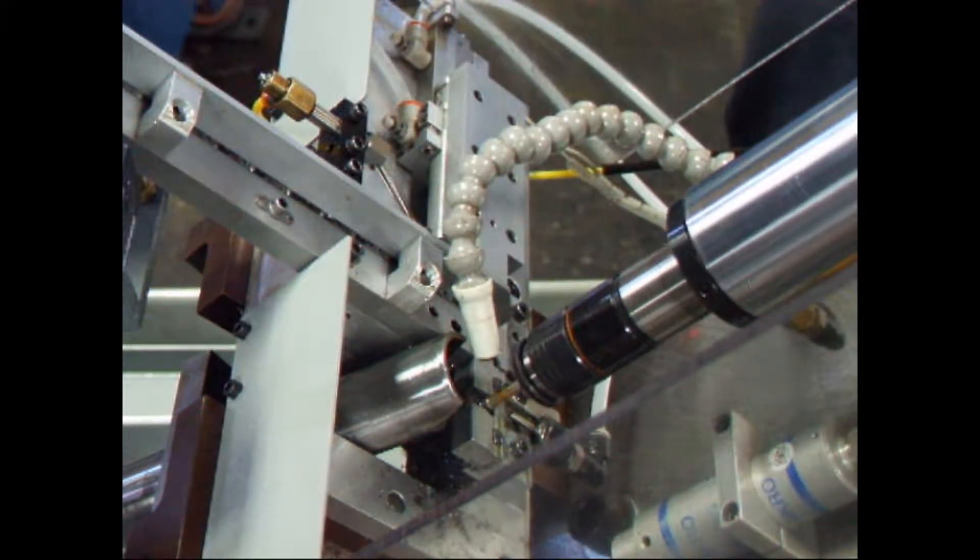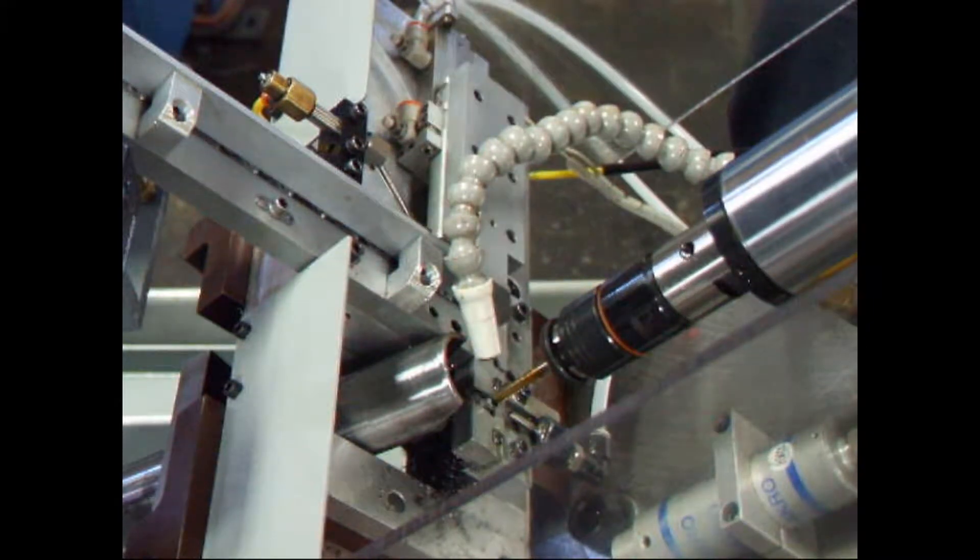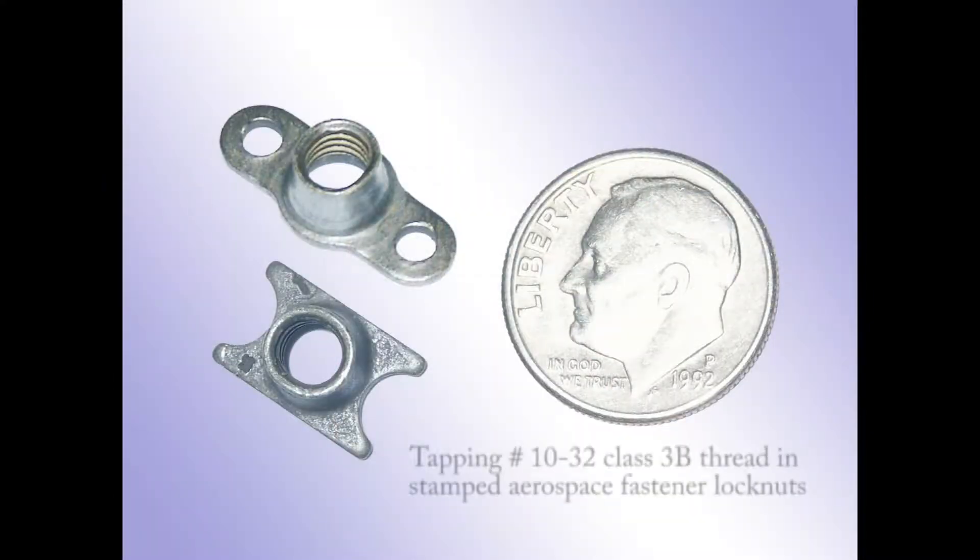This system features automatic material handling, roll control detection, and a Zagar MQ-150 ball-screw-actuated CNC unit. The parts shown are stamped steel aerospace fastener lock nuts. The ID thread is a class 3B number 1032.